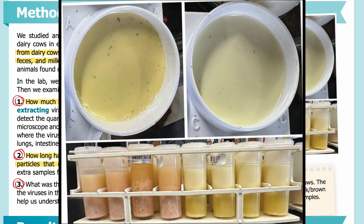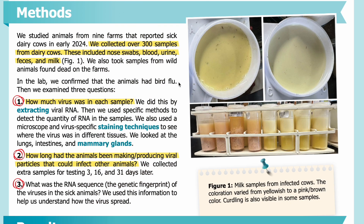In Figure 1, you can see milk samples from infected cows. The coloration varied from yellowish to a pink-brown color, and curdling is also visible in some samples. The top part of the image shows milk from above; the bottom shows a side view of eight samples. The ones on the left are more pinkish-brown with visible curdling, while the ones on the right are more yellow in color.